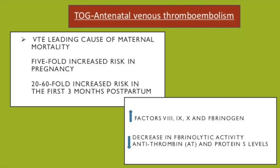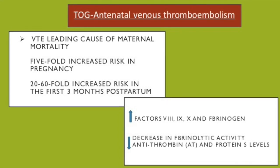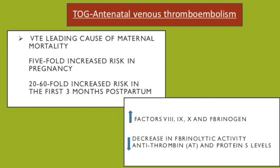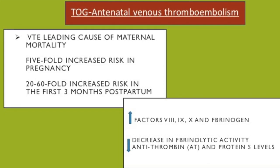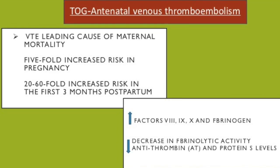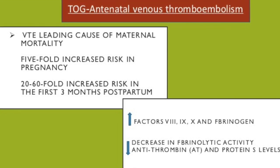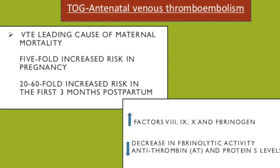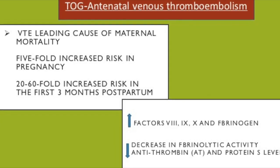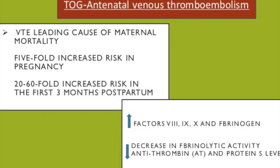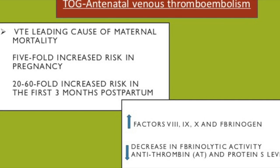VTE is the leading cause of maternal mortality. There's a five-fold increased risk in pregnancy and a 20 to 60-fold increased risk in the first three months postpartum. Factors such as factors 8, 9, 10, and fibrinogen increase in pregnancy. There are also decreased levels of antithrombin and protein S, with a decrease in fibrinolytic activity. All of this means there is an increased predisposition to developing a clot.